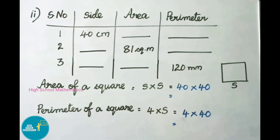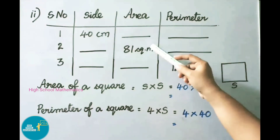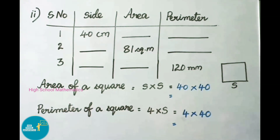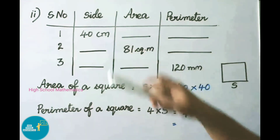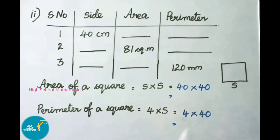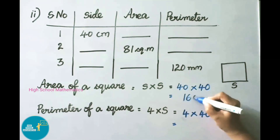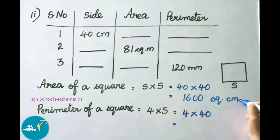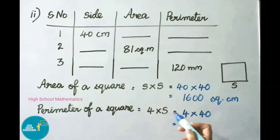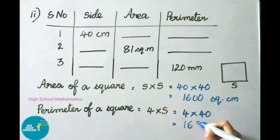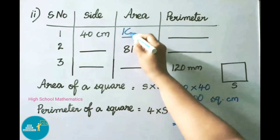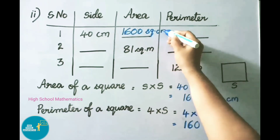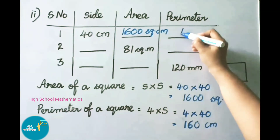For the second question, first row, they have given side 40 centimeters. We need to find area of square and perimeter of square. Area of square = side × side = 40 × 40 = 1600 square centimeters. Perimeter of square = 4 × side = 4 × 40 = 160 centimeters.